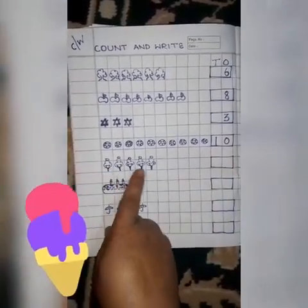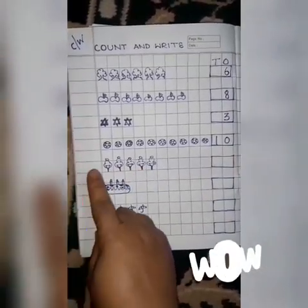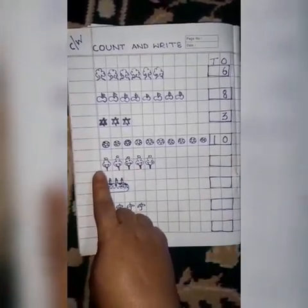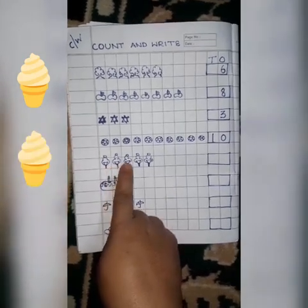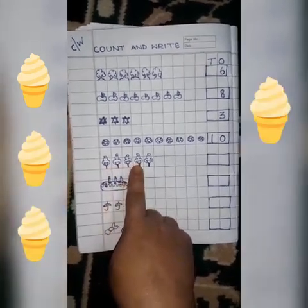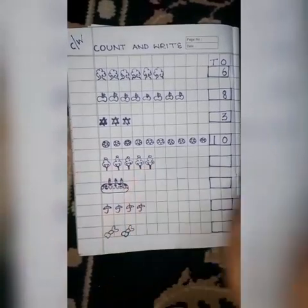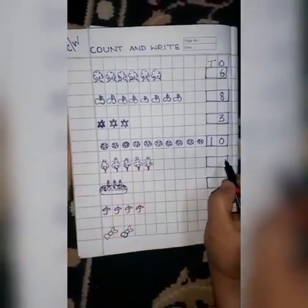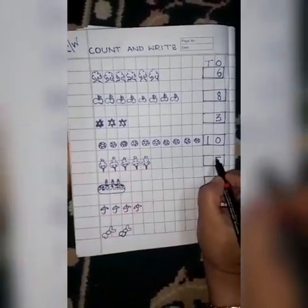These are ice creams. Wow! Let's count it. 1, 2, 3, 4, 5. So, 5 ice creams. We will write 5.